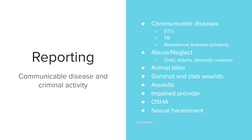Regarding abuse and neglect, child abuse or neglect, elderly abuse, and domestic violence must be reported. For children and the elderly, reporting is required to keep them safe. You also need to report animal bites, gunshots or stab wounds, any kind of assault, an impaired provider — someone coming to work drunk or under the influence of drugs — anything that goes against OSHA, and cases of sexual harassment in the workplace.